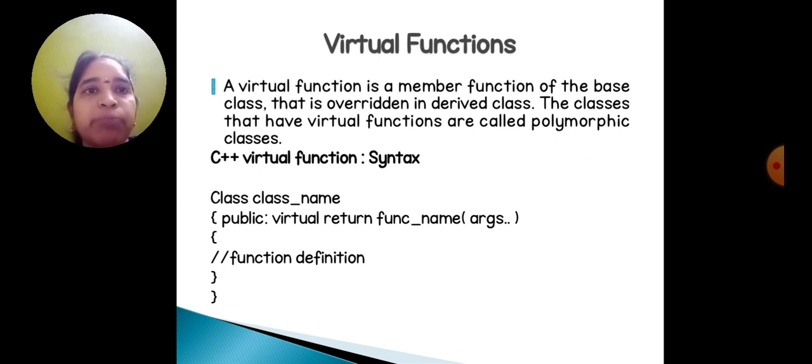Class, class name, public virtual return function name, arguments. Within the bracket, we give any type of argument. Within the curly braces, what the user needs, that function will be defined here.